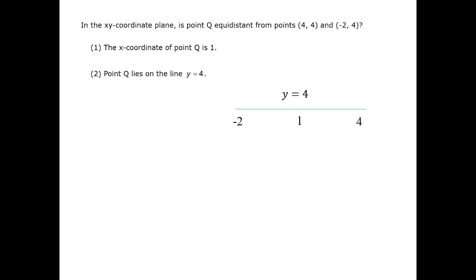This, however, is not the only possibility in which it's equidistant from the two points. Any point that lies on the vertical line x equals 1 will be equidistant to the other two points.